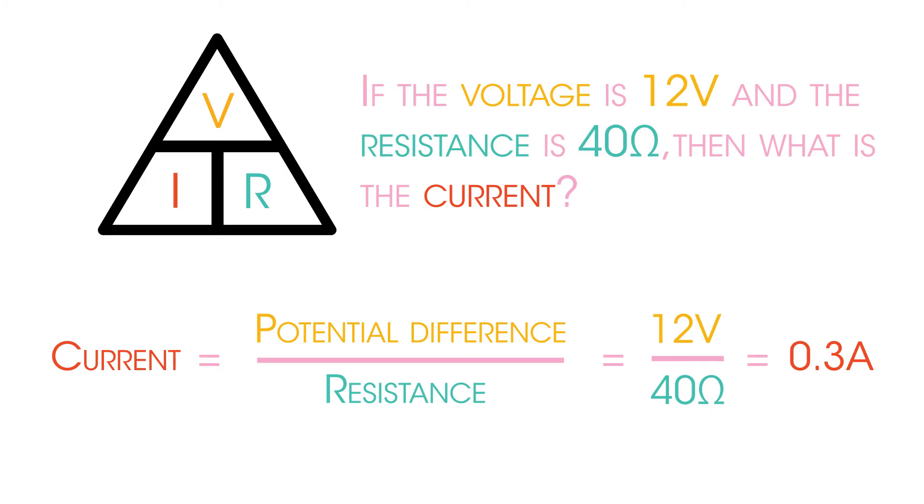See, it's very easy substituting values into the V equals IR equation. So now let's have a look at how to measure the potential difference across different components.